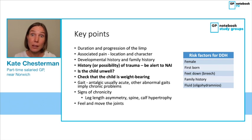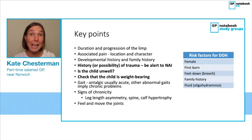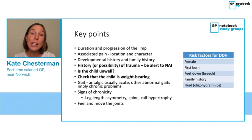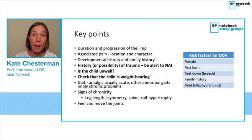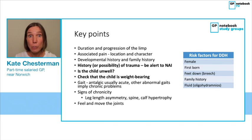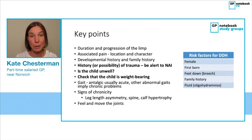Check that the child is weight-bearing. Have a look at their gait — if they've got an antalgic gait, a painful limp, that usually implies an acute problem, whereas other gaits usually imply chronic problems. Other signs of chronicity may be leg length asymmetry, spine deformities or calf hypertrophy. So worth looking out for those as well. We want to feel and move the joints.